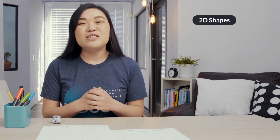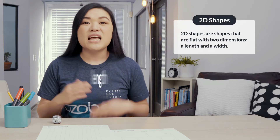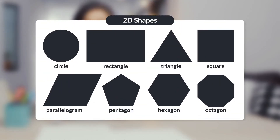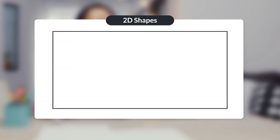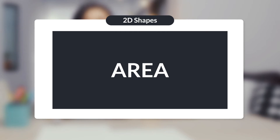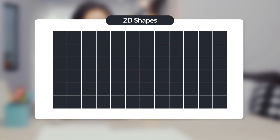Let's take a minute to talk about geometry, or math about shapes and figures. 2D shapes are shapes that are flat with two dimensions: length and width. Some examples of 2D shapes include circles, rectangles, triangles, squares, parallelograms, pentagons, hexagons, and octagons. The space inside a 2D shape is called area. The space is divided into smaller squares or units. Different math processes are used to find the area of different shapes. Today you will use rectangles to help you understand area. You will find the area of a rectangle by adding up all of the units inside the shape or by multiplying the length by the width.